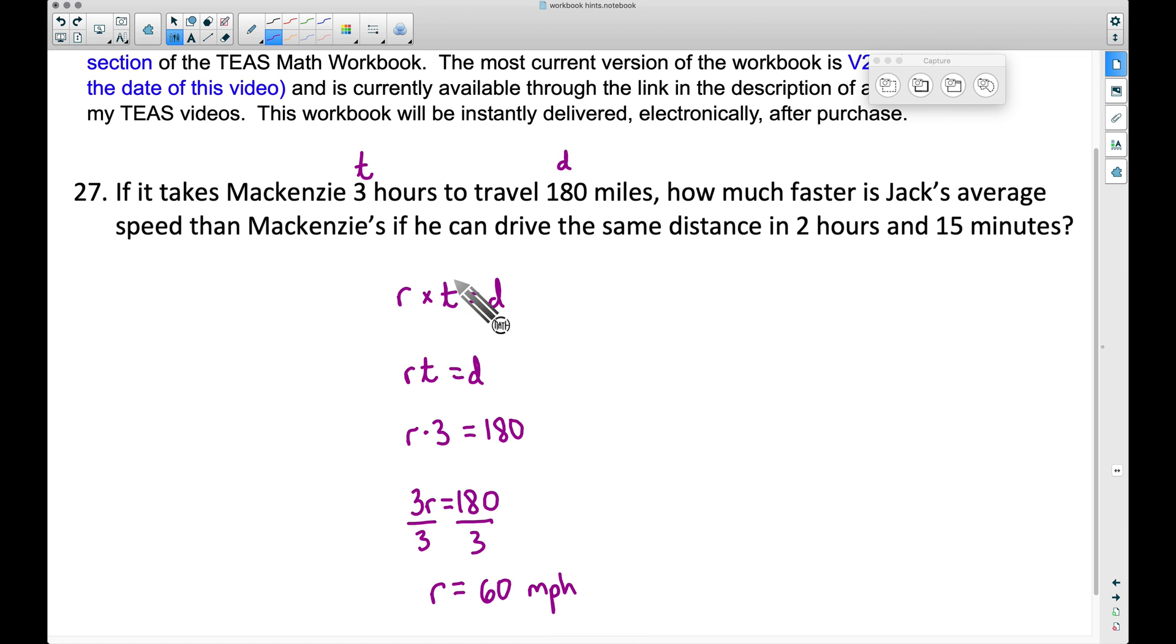You probably knew that without me even going through this formula, but I wanted to remind you that rate times time equals distance, and if you know any two of these values, you can always solve for the third value. If McKenzie was driving 60 miles per hour for three hours, 60 times 3 rate times time does give you 180 miles.